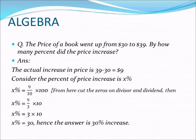Then we get x percent equal to 9 by 3, into 10. We know 9 by 3 is 3, then x percent is equal to 3 into 10, equal to 30. So x percent is equal to 30. In the beginning, our assumption was the percentage of price increase is x percent, which is equal to 30. Hence the answer is 30 percent increase in the price.